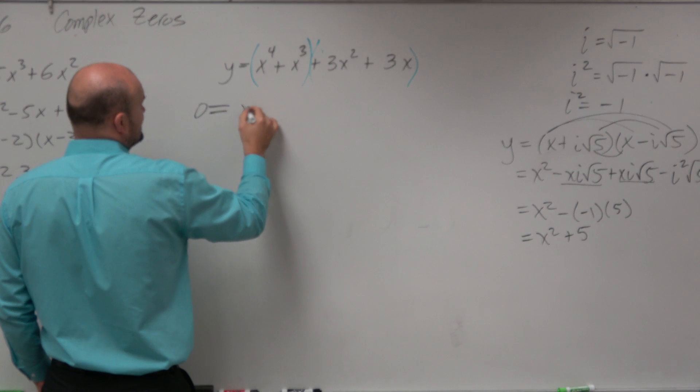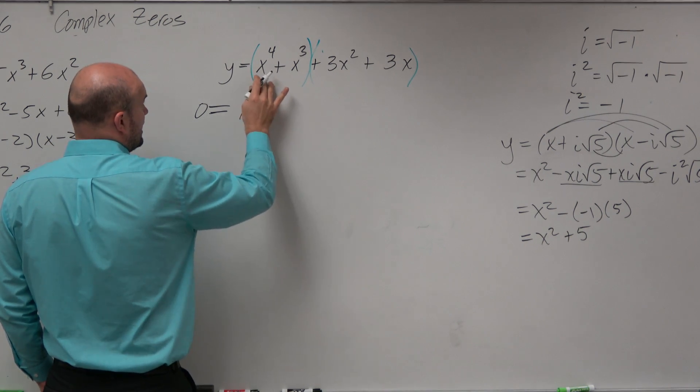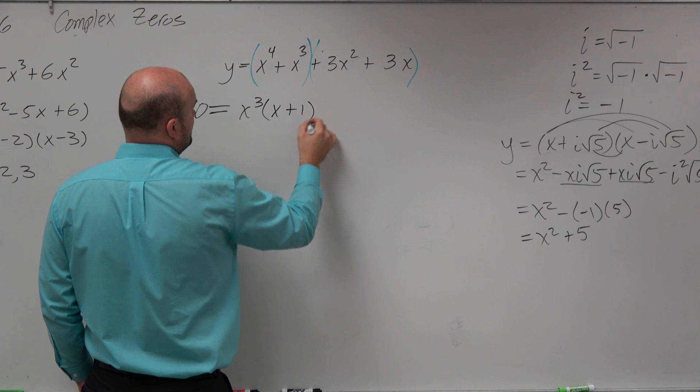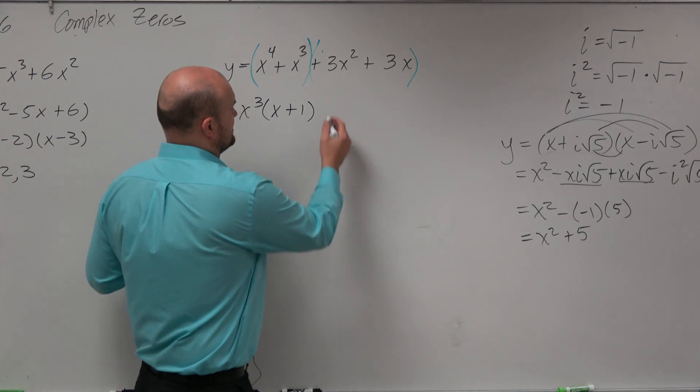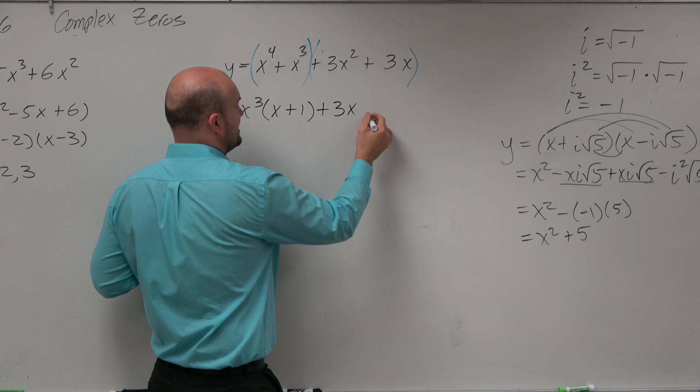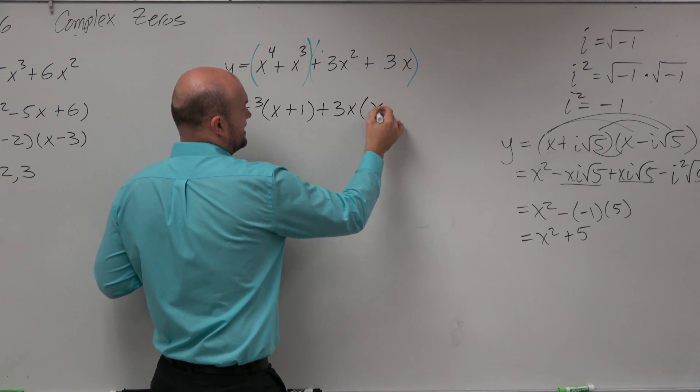So here I can factor out an x cubed. When I factor out an x cubed, I'm left with x plus 1. Over here, you can see I have a 3 and an x that are the same. So I factor out 3x, and therefore I'm left with x plus 1.